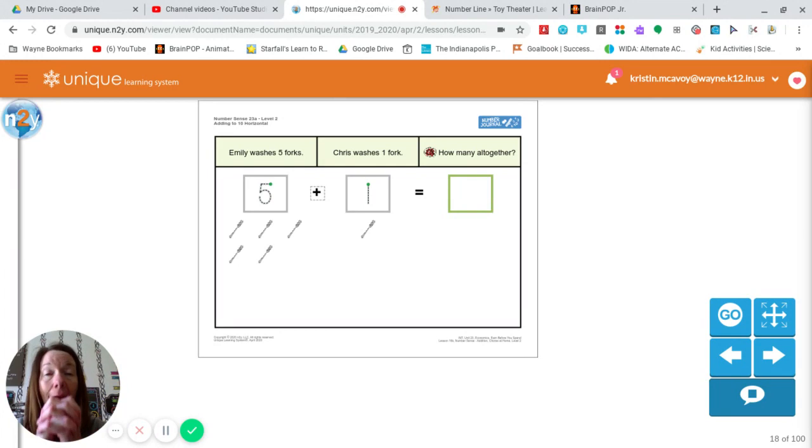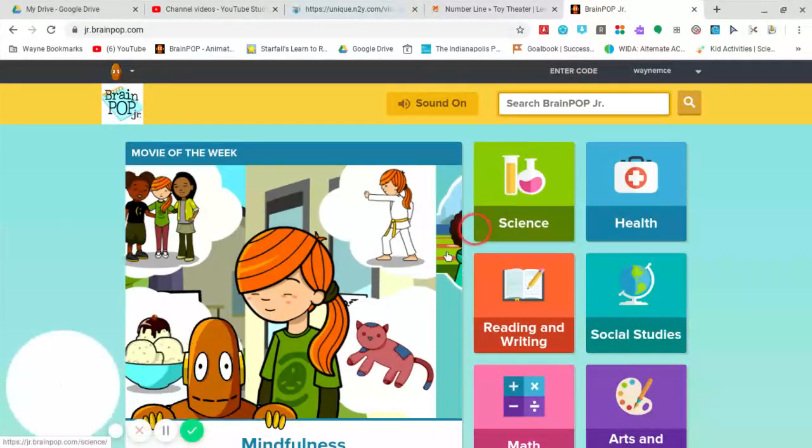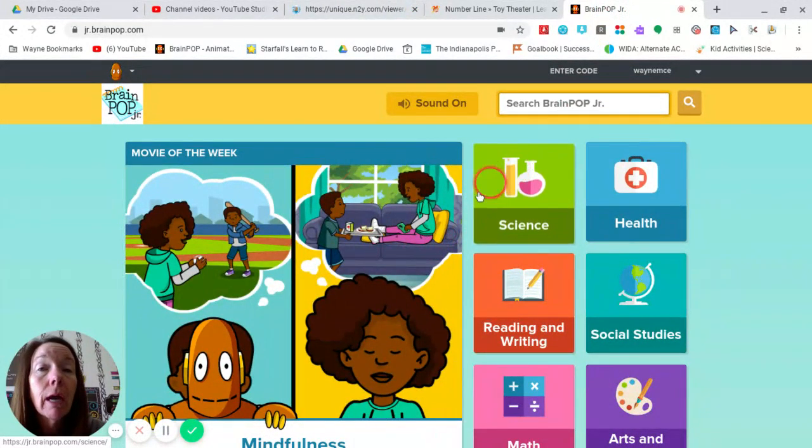It says plus, which tells us that we are going to join together, we're going to add all together. This is not in the outline, but if you are interested, you could watch a Brain Pop Junior video on basic adding. You just have to go to Brain Pop Junior and log in.